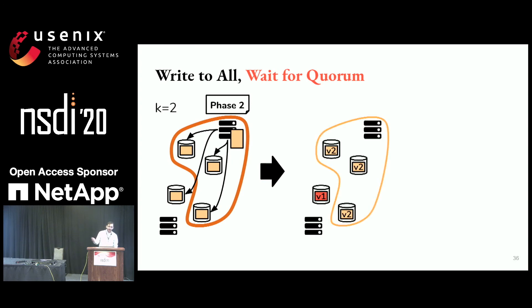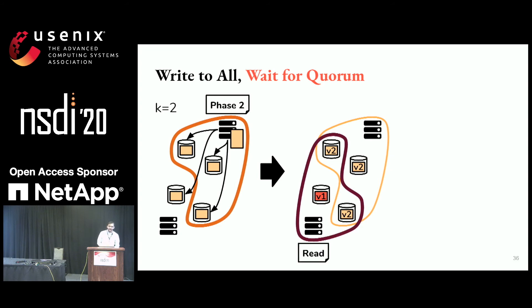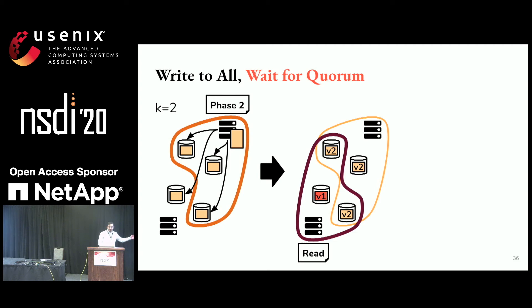Given the write quorum, when we try to read, we're guaranteed k splits intersection between our read quorum and the write quorum used in phase two. So we're guaranteed to have two splits of the data — and we also get one split of the older copy. But two splits is enough to recover the data.